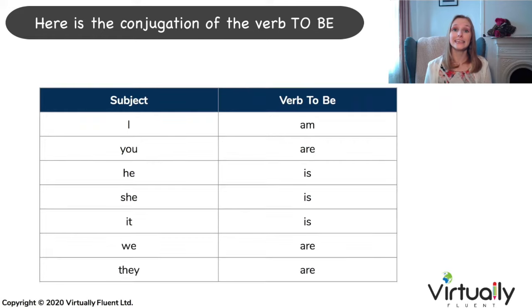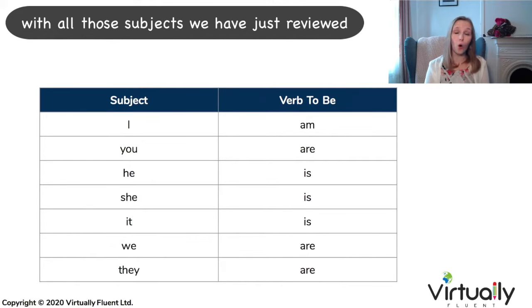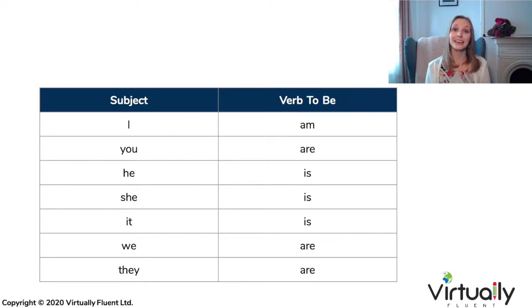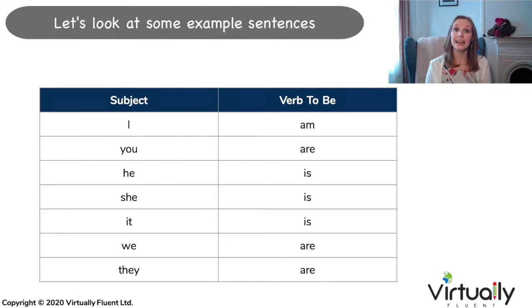Here is the conjugation of the verb to be with all those subjects we have just reviewed. Let's look at some example sentences.